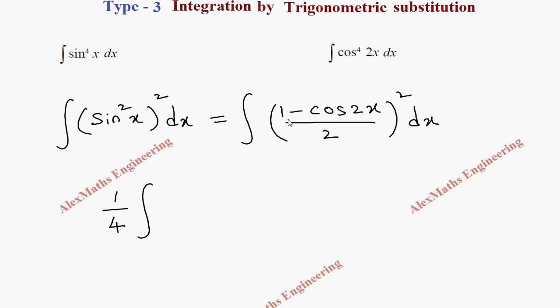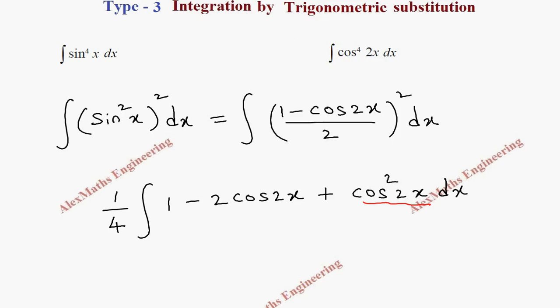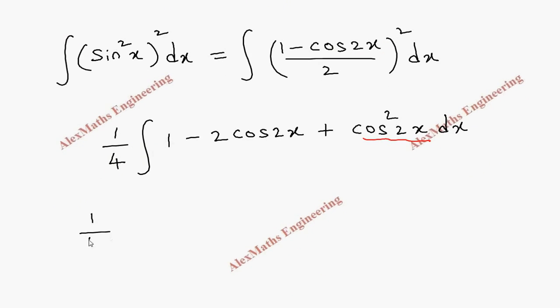We're going to expand this. The denominator becomes 4, so we take 1/4 outside the integral. Expanding using (a - b)² gives a² - 2ab + b², which yields 1 - 2cos2x + cos²2x dx. For cos²2x we're going to apply a separate formula.